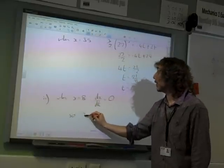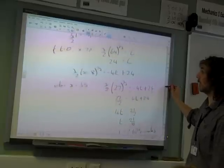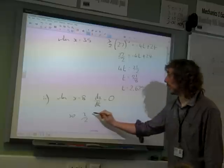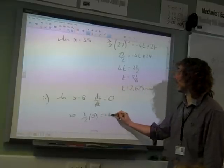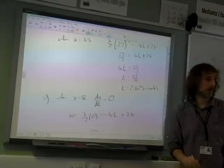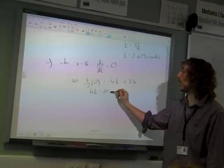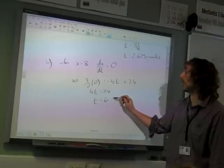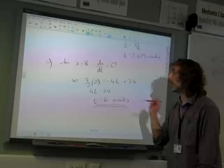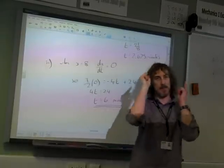So 3 over 2 times (x minus 8), that's 0, isn't it? Times 0 is minus 4t plus 24. So we end up with 4t being equal to 24, or t being 6. And that's maths!